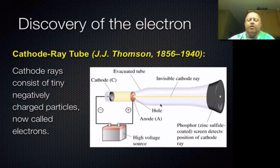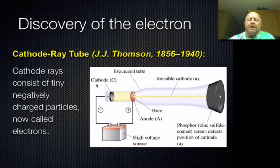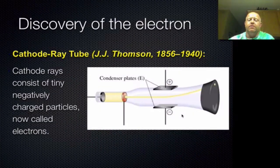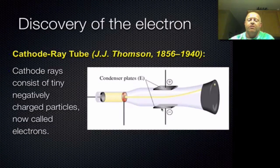He was able to show that this beam of electrons existed by using this evacuated tube — basically a vacuum chamber. We call that a cathode ray tube because you have a cathode at one side, a little opening where the anode is to allow the electrons to flow through that opening and then pass through the beam. Not only was he able to determine the beam existed, but he was also able to use magnetic plates called condenser plates with a positive and negative charge.